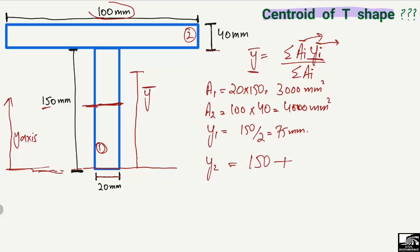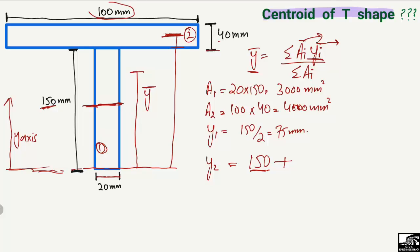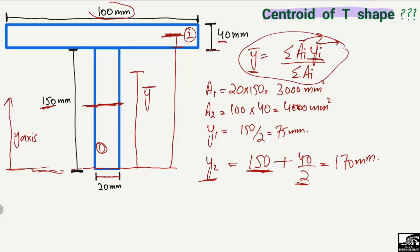For the centroid of the second object, y2 is measured from the bottom of the beam up to the centroid of the second object. It equals the full height of the first object plus half the depth of the second object: y2 = 150 + (40 / 2) = 150 + 20 = 170 mm.